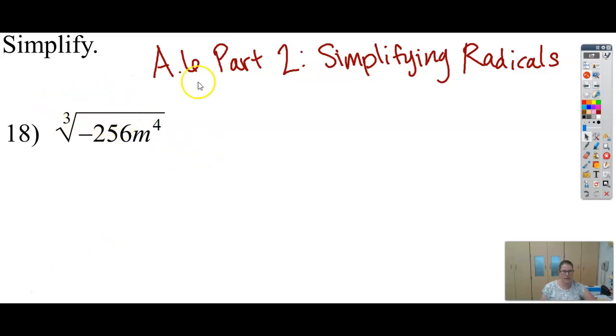But if I see a different number there besides 2, or besides nothing being there, which means it's a square root, then I am going to need to find a different number of copies underneath in order to bring one out.